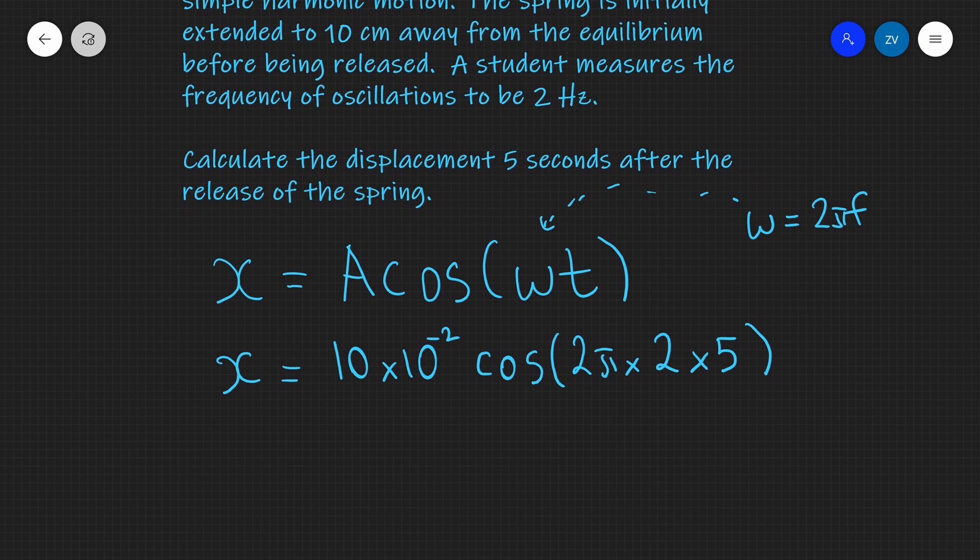Now I'm going to input this into a scientific calculator, and this is really important: in all of these equations, your calculator absolutely needs to be in radians mode. So I need to input 10 times 10 to the power of minus 2 multiplied by cosine of 2 pi multiplied by 2 times 5. This is going to give us a displacement of 1 over 10, which equals 0.1 meters.